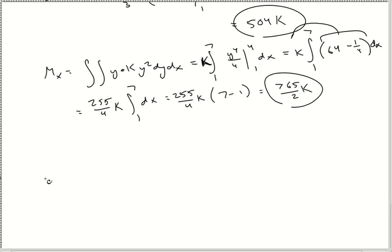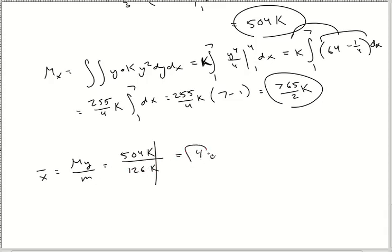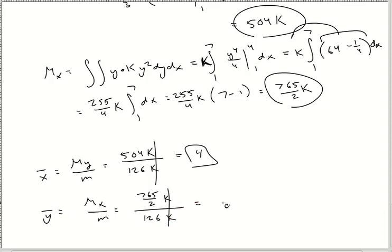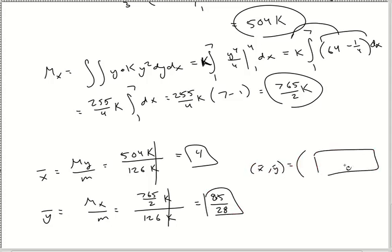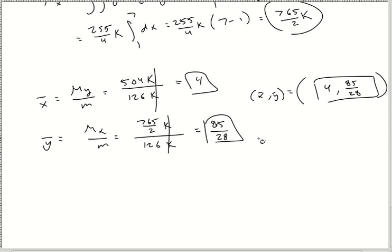Finally, the answers they're actually waiting for. x̄ is M sub y over little m: 504k over 126k. The k's cancel, and you end up with 4. ȳ is M sub x over little m: 765/(2k) divided by 126k. The k's cancel, and using the calculator I got 85/28. So the final answer, as stylized in WebAssign, is (4, 85/28).